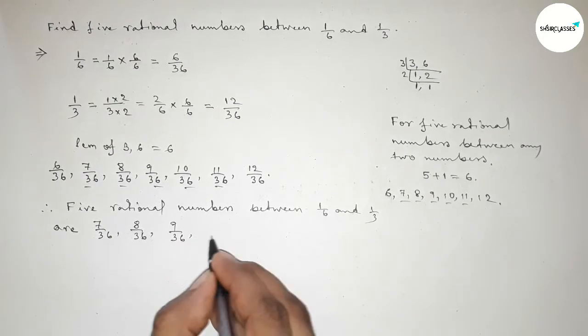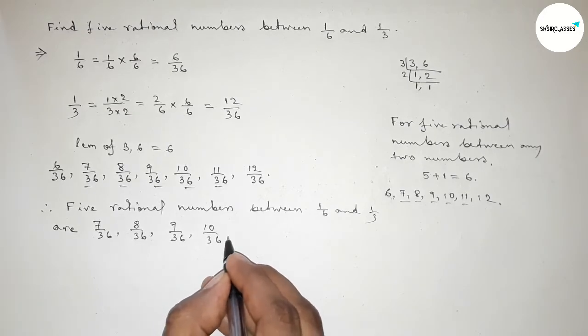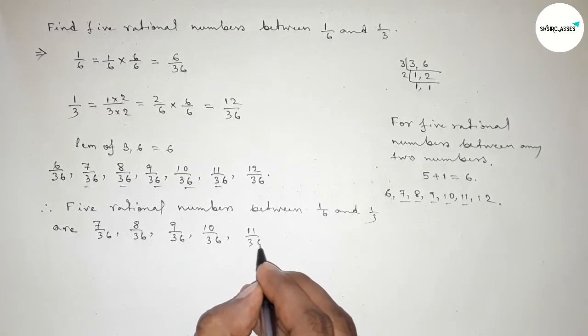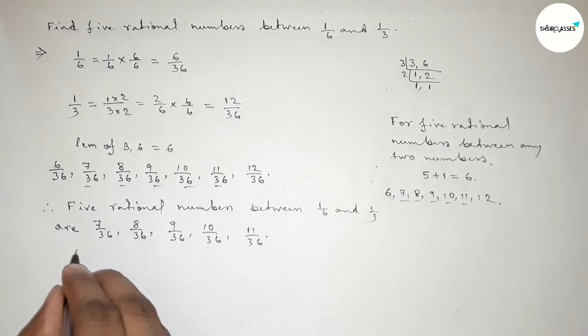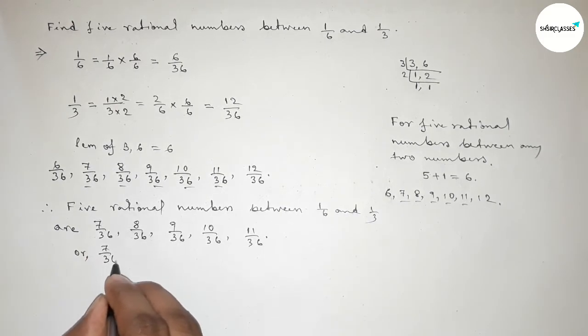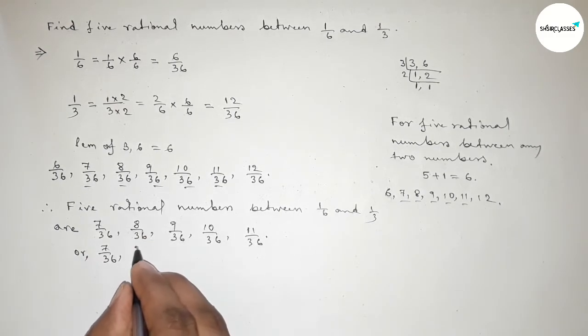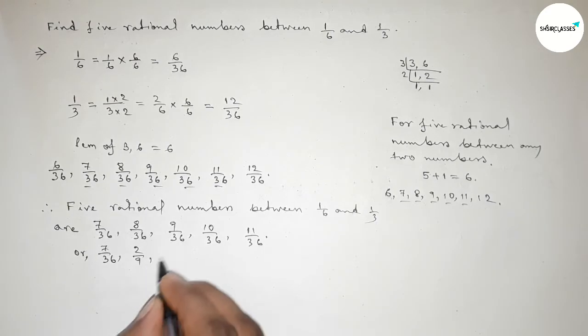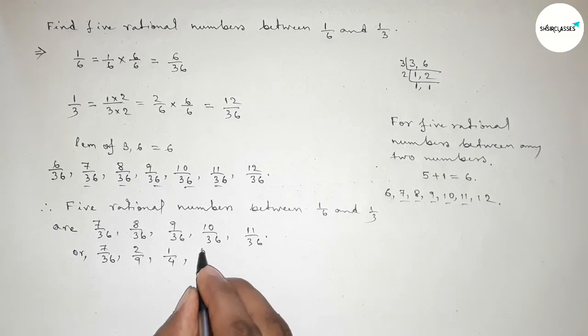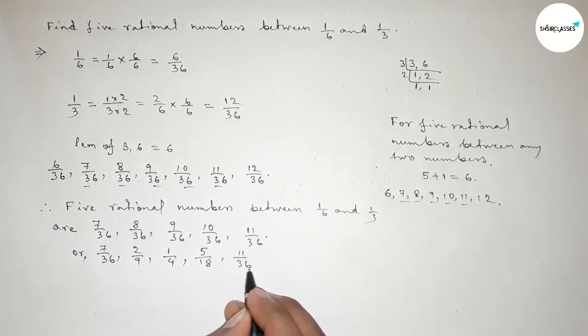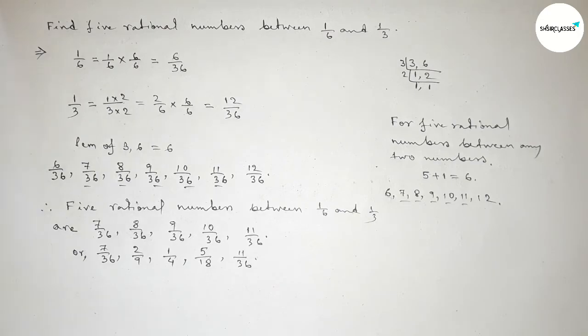Or we can write, so this is 7 over 36, and if we divide both numbers by 4 then 2 over 9, and if we divide both numbers by 9 so this is 1 over 4, and this is 5 over 18, and this is 11 over 36.